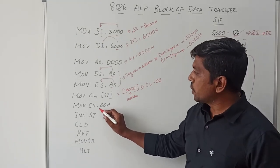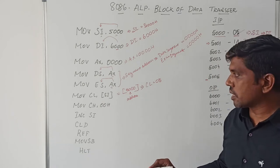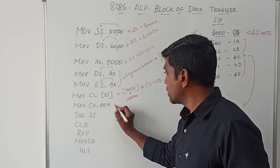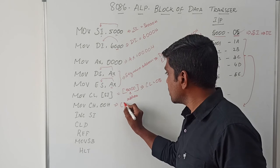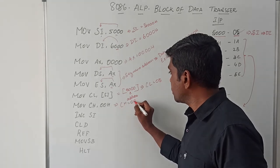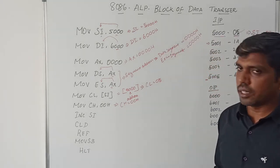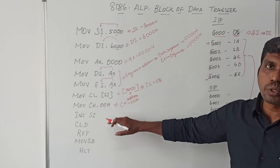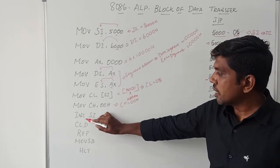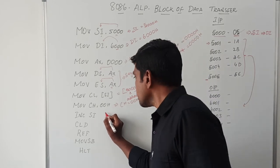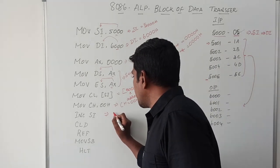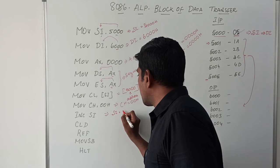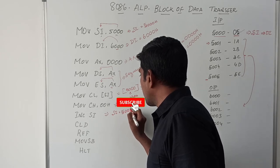The next instruction clears the CH register content: MOV CH, 00. After execution, CH becomes 00. Then you increment the source index register content using INC SI. After the increment instruction, SI moves to the next address location 5001H to point to the first data.